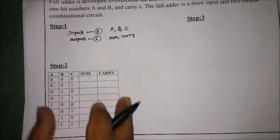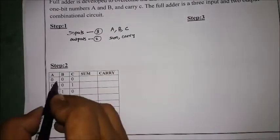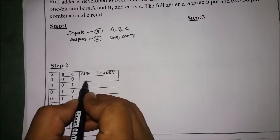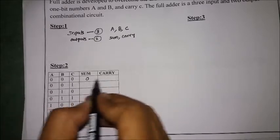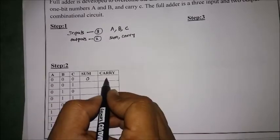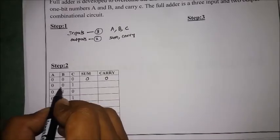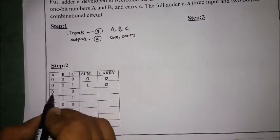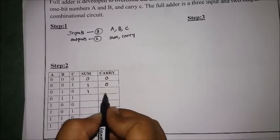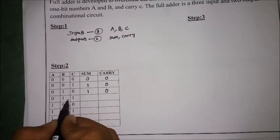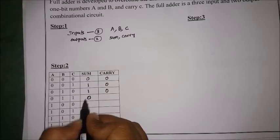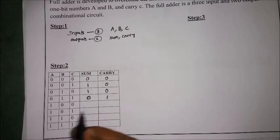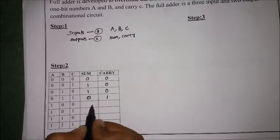Step two: draw a truth table for the given specifications. Sum = A + B + C. For 0+0+0, sum is 0 and carry is 0. For 0+0+1, sum is 1 and carry is 0. For 0+1+0, sum is 1 and carry is 0. For 0+1+1, sum is 0 and carry is 1.